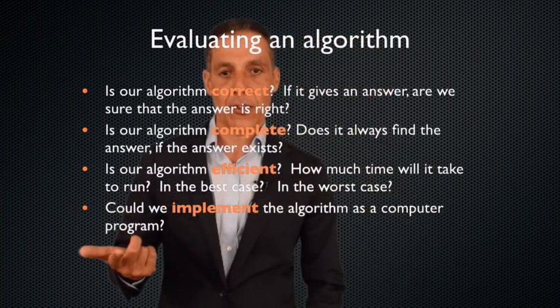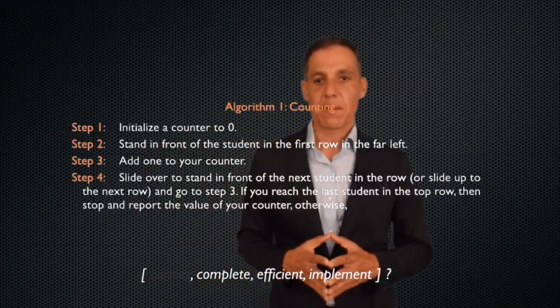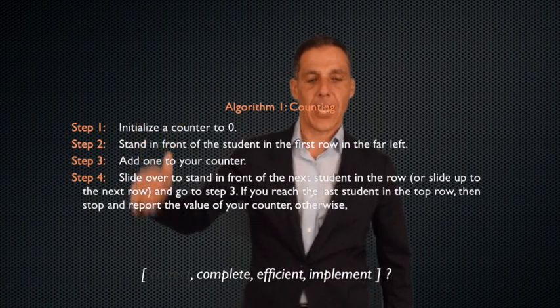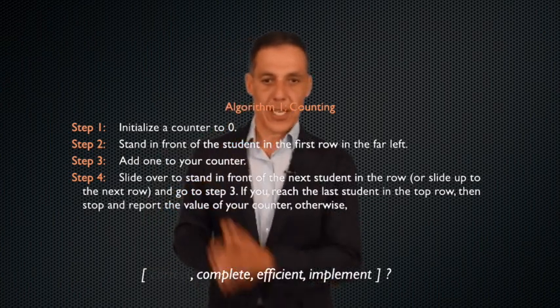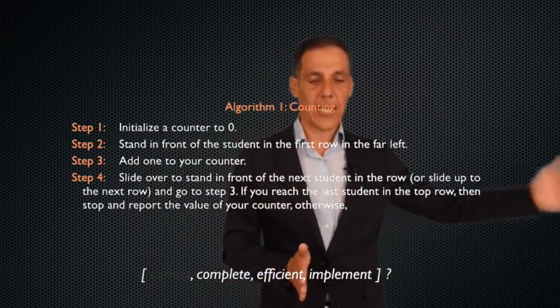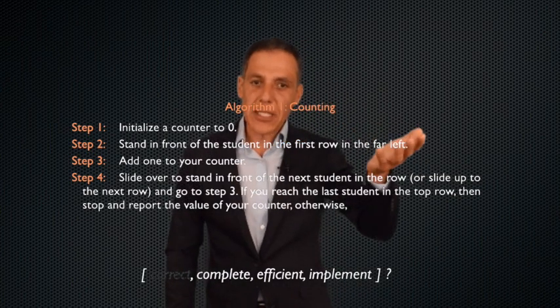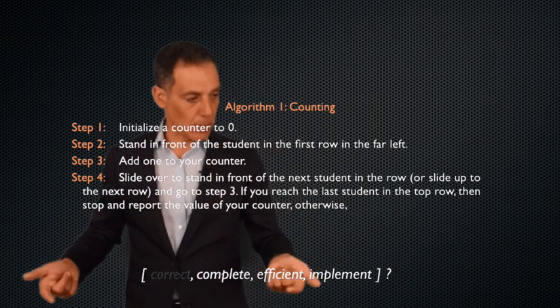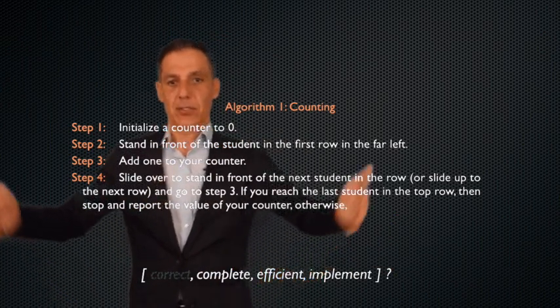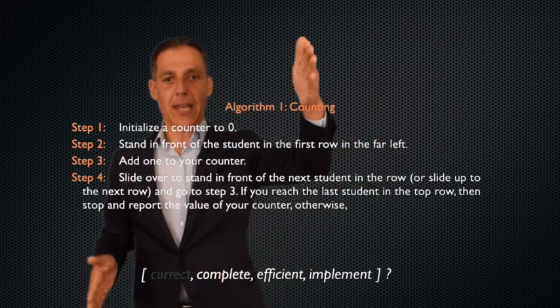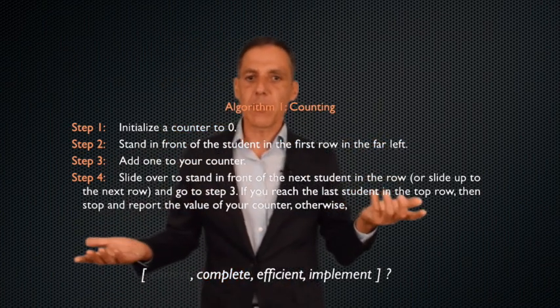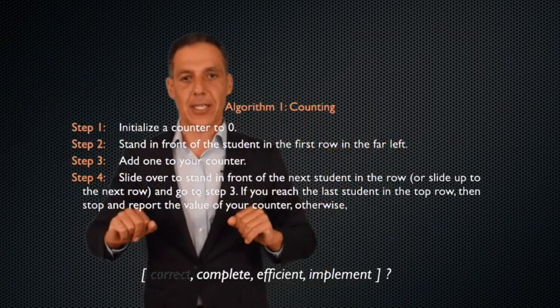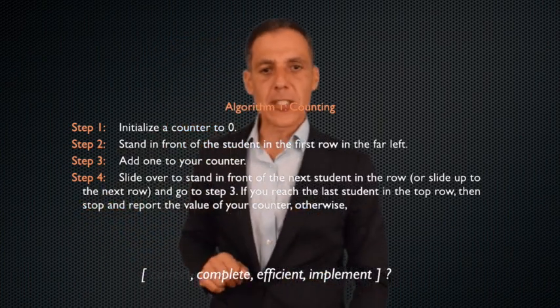So let's go back to our counting algorithm and see if it satisfies these constraints. Here again is my four-step counting the number of students in the classroom. Initialize a counter, stand in front of the first student, add one to the counter, slide over, add one, slide over, add one, and so on. So it seems to be correct. As long as everybody's sitting in that configuration, I skip over empty seats, no people sitting in the aisle. Then when I get to the end and I report a number, well it seems like that would be the number of people in class, assuming nobody came in while I was counting.